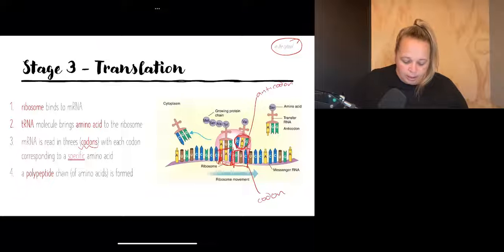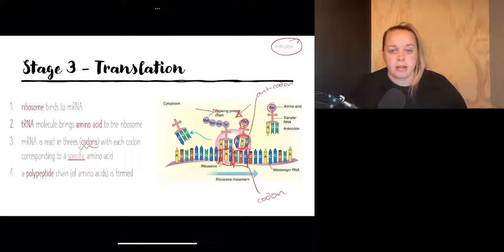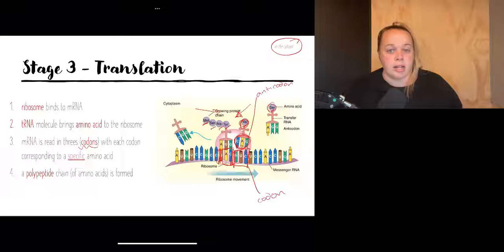And what happens is the tRNA molecules come in and they bring with them amino acids on the back. So you can see that there are different amino acids. We've got met serine. So met stands for methionine, serine, alanine, tyrosine, tyrosine, valine and another serine.